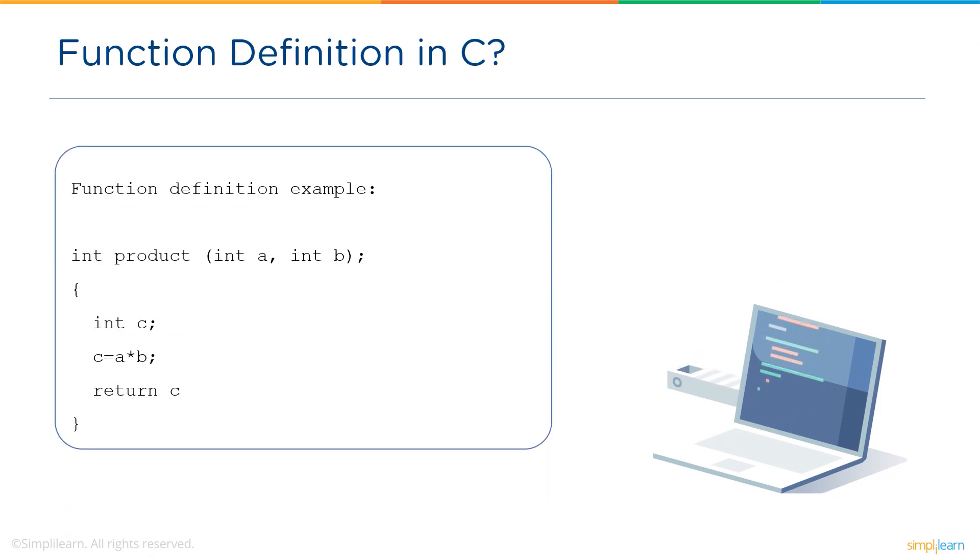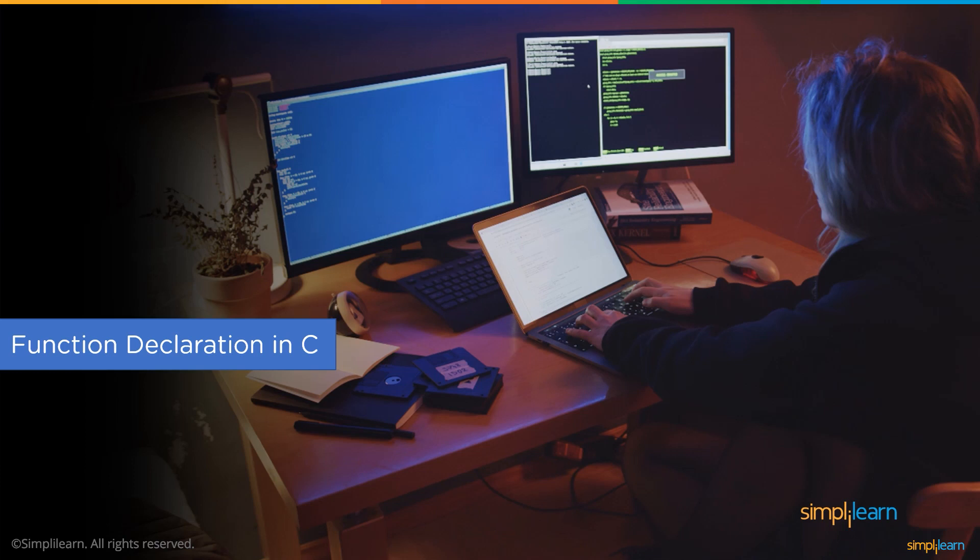In the given below function definition example, we have int as a data type, product as a function name, followed by parameters a and b. Next, the body of a function consists of set of statements to perform certain operation. So in this particular example we're going to perform a product of two numbers. Up next we have function declaration in C.